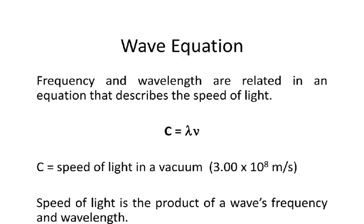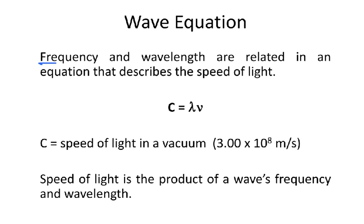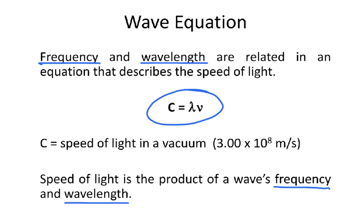Now we're going to talk about the wave equation. Frequency and wavelength are related in an equation that describes the speed of light. That little upside-down Y looking thing is called lambda, and the little V shape is called nu — those are Greek letters. C itself is the speed of light in a vacuum, and that number is known: 3.00 times 10 to the 8th meters per second. The speed of light is the product of a wave's frequency and wavelength — you multiply those two together and you get the speed of light.